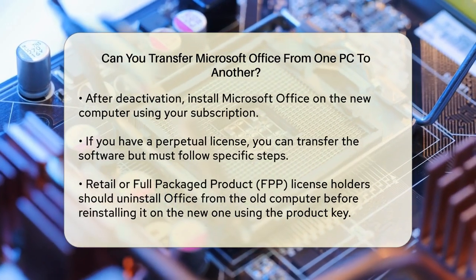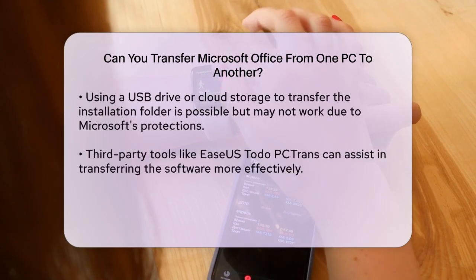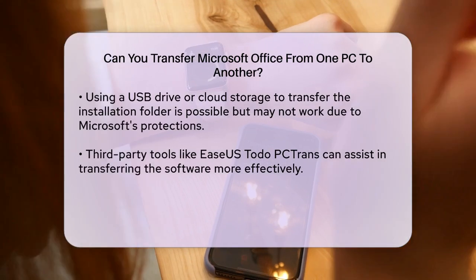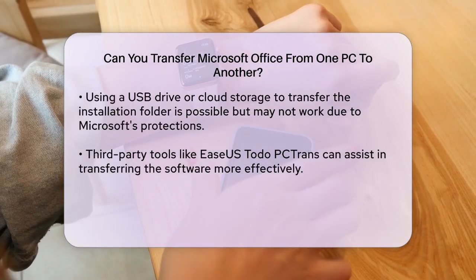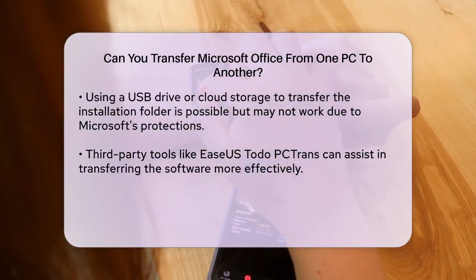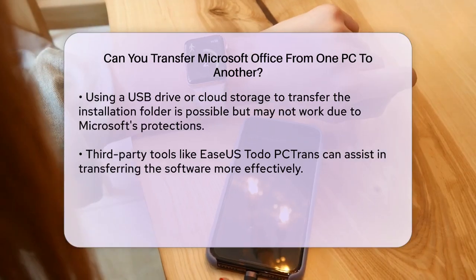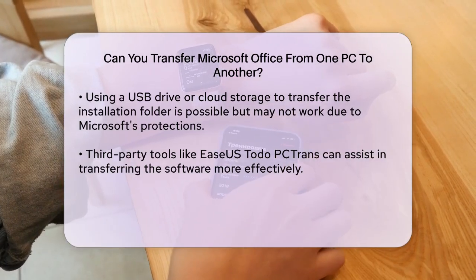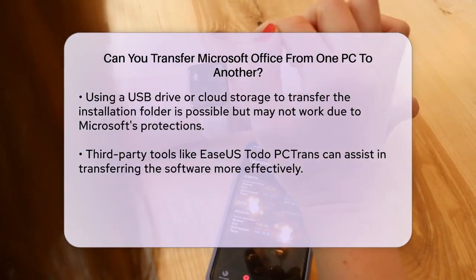Another way to transfer Microsoft Office is by using a USB drive or cloud storage. You can copy the Microsoft Office installation folder to a USB drive or upload it to a cloud service like OneDrive or Google Drive. Then you can download the folder to your new computer and install it. However, this method may not work due to Microsoft's protection mechanisms, so it's often better to use a third-party transfer tool like EaseUS ToDo PCTrans, which can help you transfer the software more smoothly.